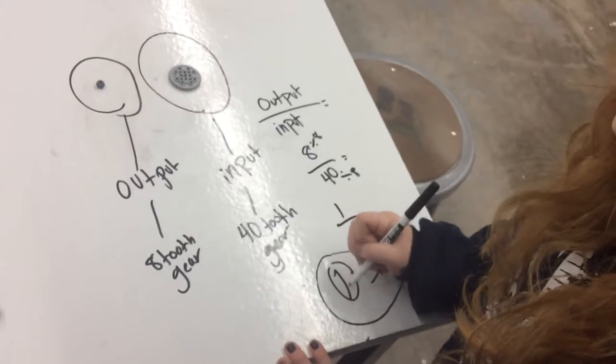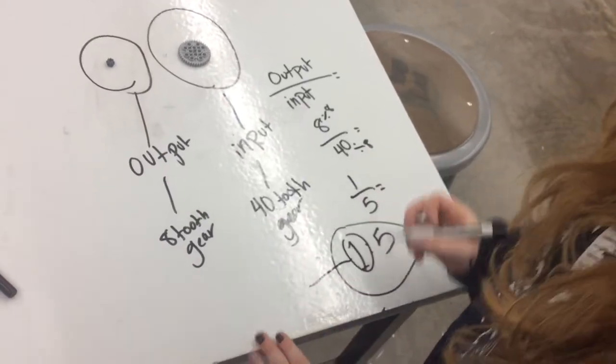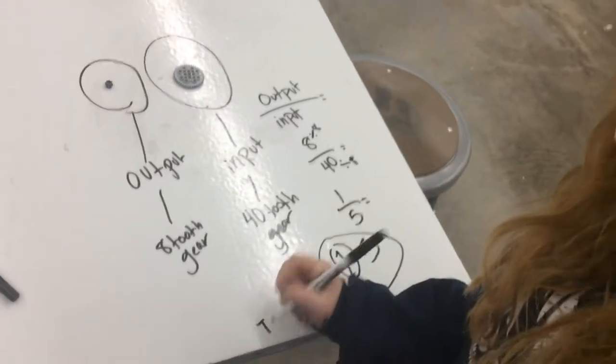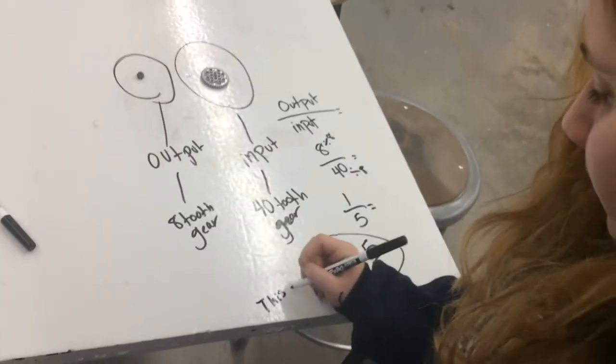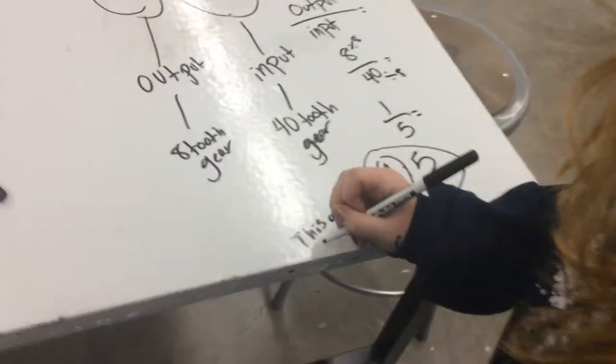The 1 is hooked onto the motor, so when that turns once, the 5 is hooked onto the wheel. When that one turns once, the 5 is going to turn 5 times.